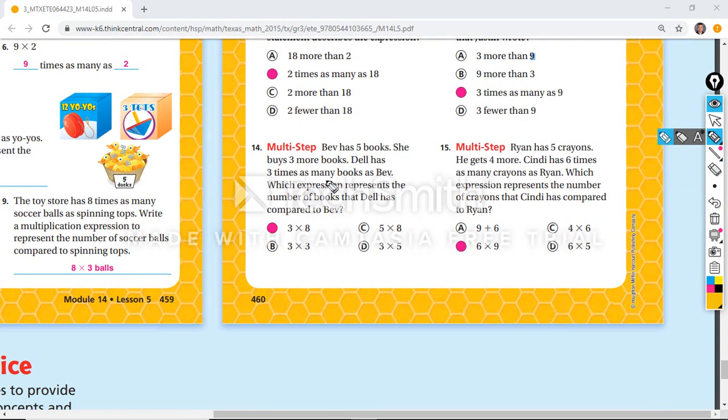Okay, the next ones. We have the multi-step ones. Bev has five books. She buys three more books. Del has three times as many. So you have to add the number of books that Bev buys. So she has eight. And Del has three times as many as eight. Three times as many as eight. So the key was adding these two.